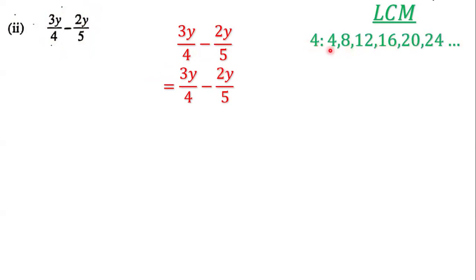We list the multiples of 4. The multiples of 4 are 4, 8, 12, 16, 20, and 24, and the list goes on. The multiples of 5 are 5, 10, 15, 20, 25, and the list goes on.